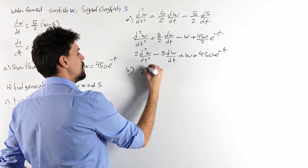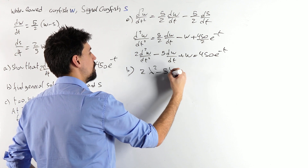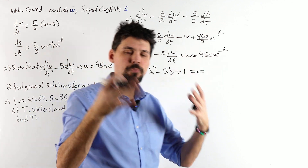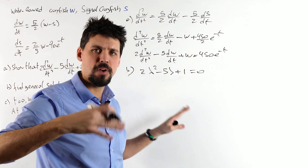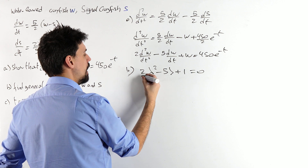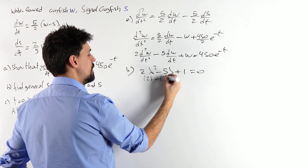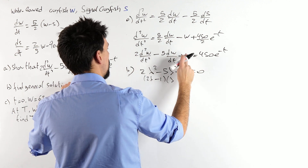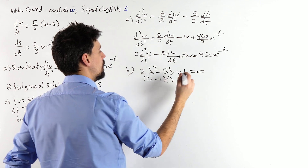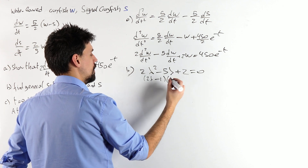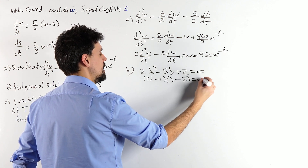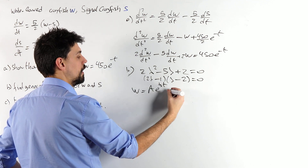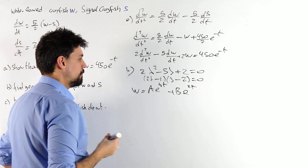Our characteristic equation is going to be 2λ² − 5λ + 1 = 0. We're going to first find our complementary solution by ignoring the right-hand side. This does factorise — that should be a plus 2, giving roots λ = 1/2 and λ = 2. So W (complementary) looks like Ae^(t/2) + Be^(2t).